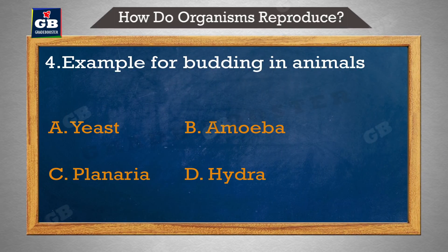Example for budding in animals — janwaron mein budding ke liye udaharan hai. A. Yeast, B. Amoeba, C. Planaria, D. Hydra.